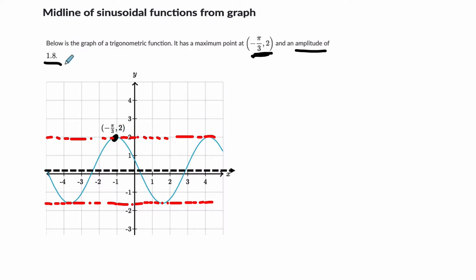Take the amplitude, in this case 1.8, and subtract it from one of your maximum points. The amplitude is this distance, the absolute value of a. It's the distance from the midline to the peak or to the valley point. So we take our height of 2 and subtract 1.8, which gives us 0.2. The equation for this line is y equals 0.2.